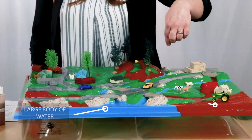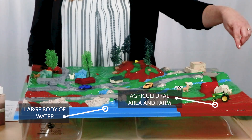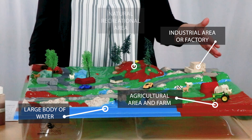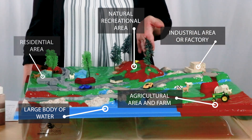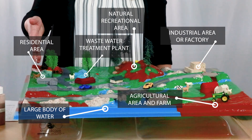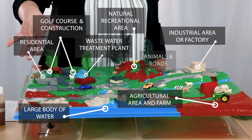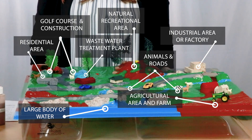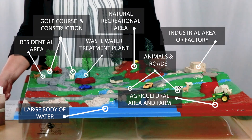Here we have a large body of water, an agricultural area and farm, an industrial area or a factory, a natural or recreational area, a residential area, a municipality with a wastewater treatment center that treats sewage. There's also a golf course, a construction zone, various animals like cats, dogs, and farm animals throughout the landscape, and roads as well.